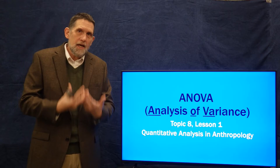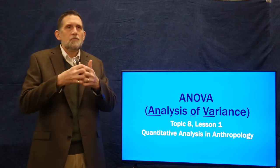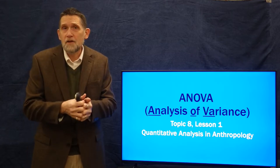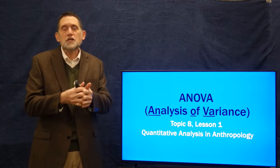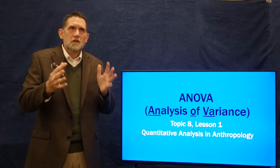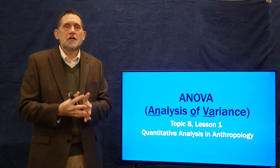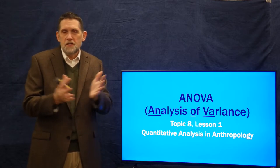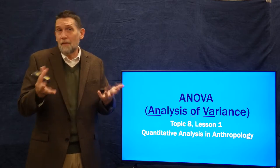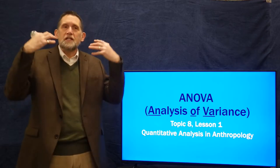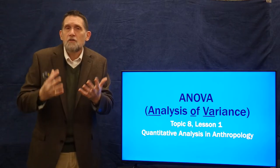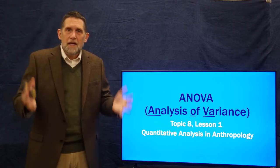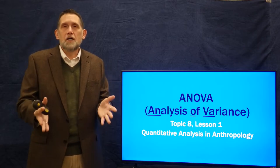In the end, what you're doing is looking at a value called the F value, which is a ratio of essentially differences of means divided by standard deviation of variance. And that's very much like the T-test and the Z-test. Conceptually, thinking about this as an expansion of the T-test is the best way to come to understand it.